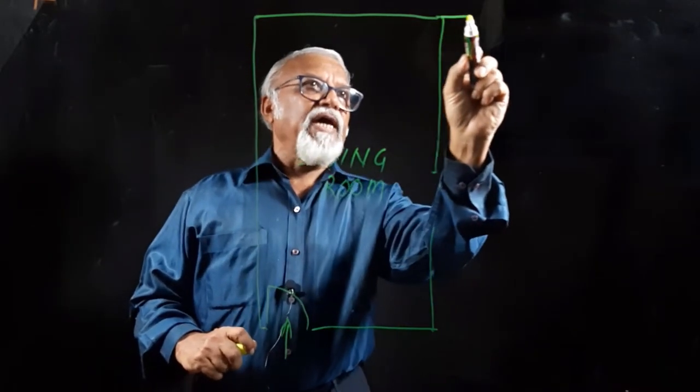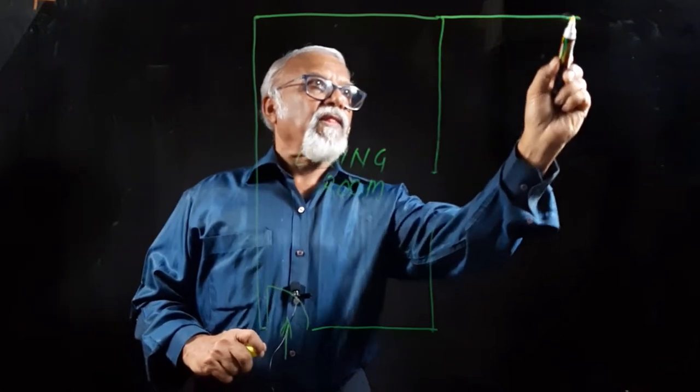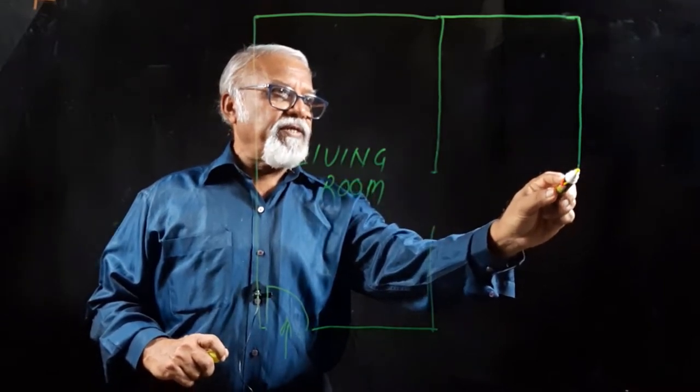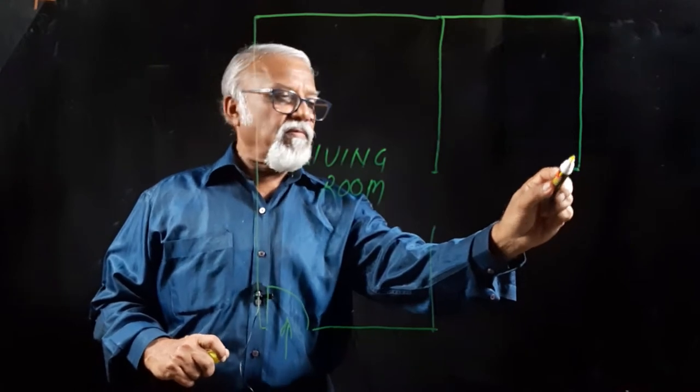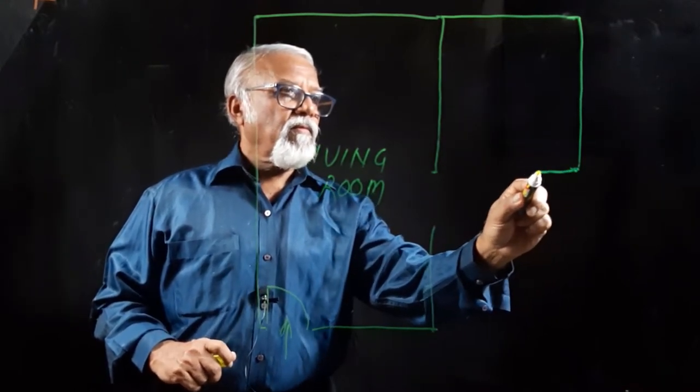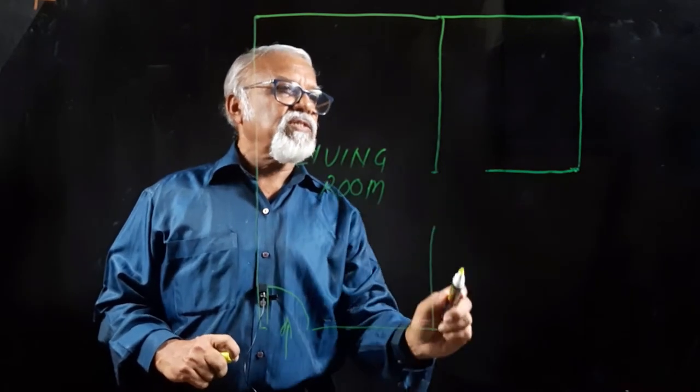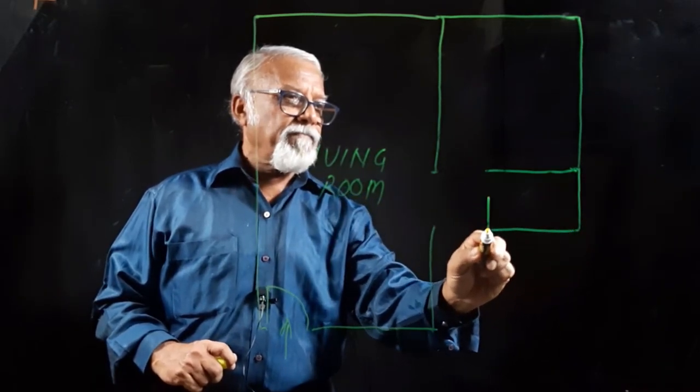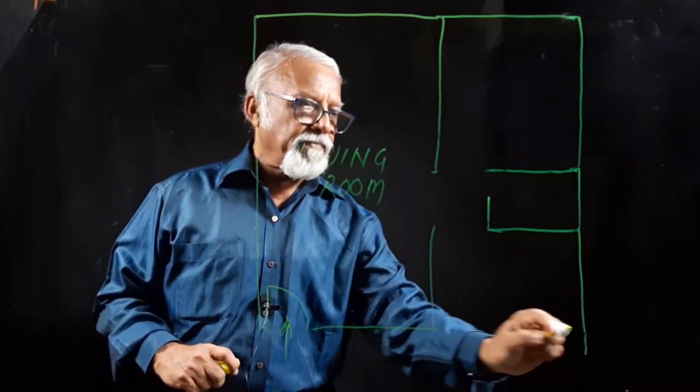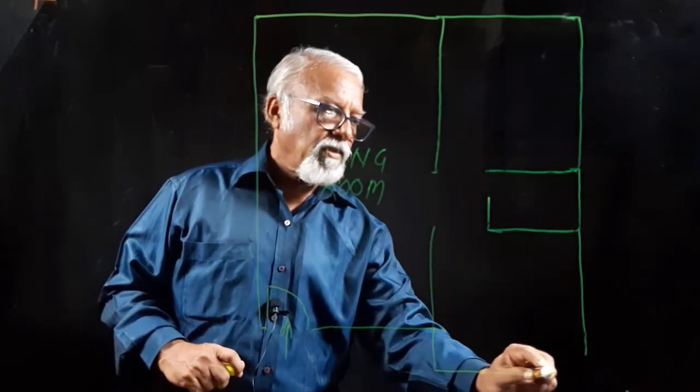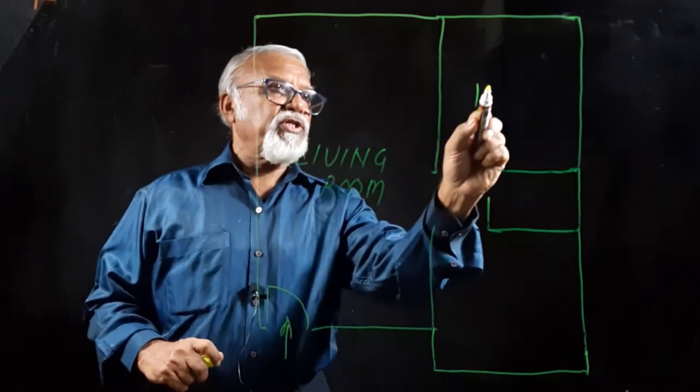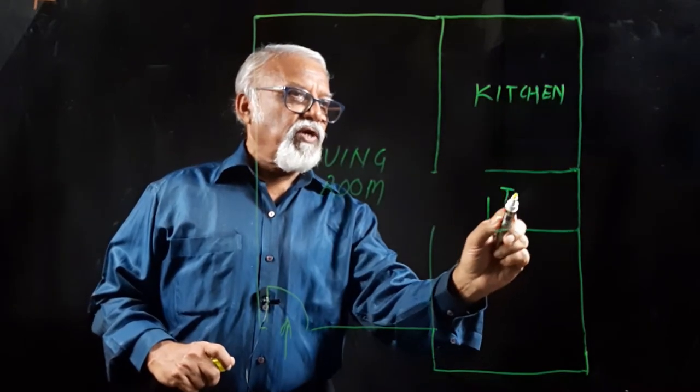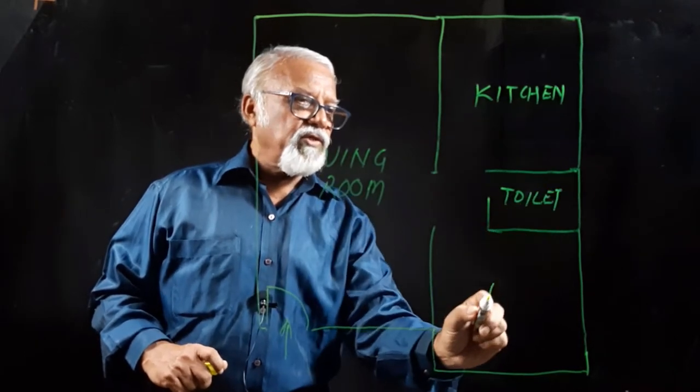If you go further on this side, about 10 feet and go down about 8 feet, then to the side, this may be your kitchen. Then you go down further, this may be your toilet block. Go down further, this may be your bed. So this is your kitchen, this is your toilet, and this is your bedroom.